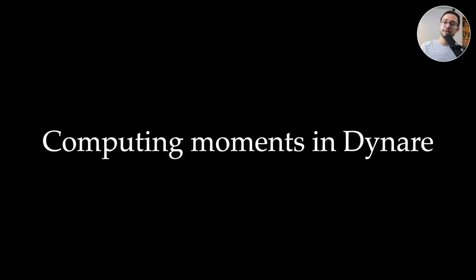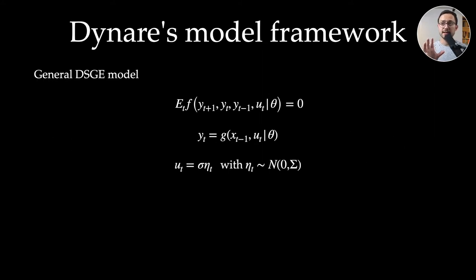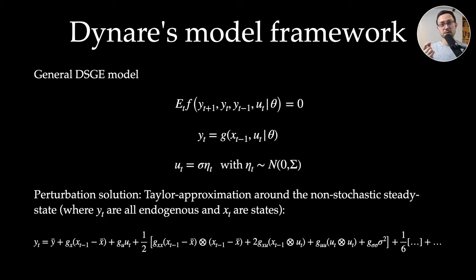Before we talk about estimation, let me give a quick overview of how Dynare computes moments. After preprocessing your model file, the framework Dynare works in is one where you only have one lead and one lag on the endogenous variables y, only current exogenous variables u, and a bunch of parameters theta. The model equations f describe the stochastic model, x are the state variables, and the solution is called a policy function g: given the previous state of the economy and observing current shocks, the policy function gives the optimal behavior of agents.